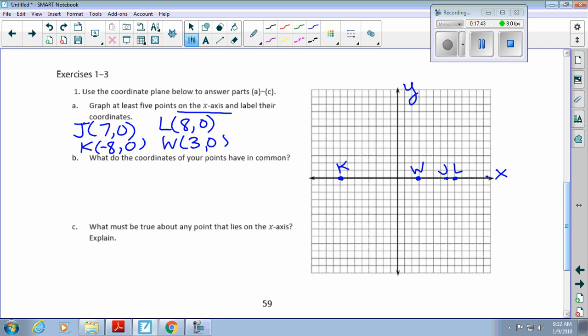Elijah? Negative 10, zero. E would be negative 10, zero because we're going to the left 10, but we're not jumping up or down at all. One, two, three, four, five, six, seven, eight, nine, ten. What do we notice that all of these points have in common? They all have a y-coordinate of zero.